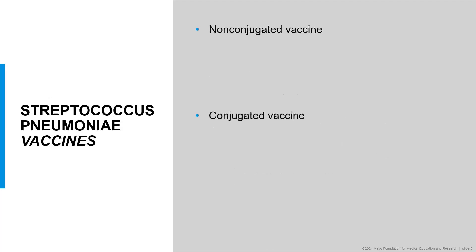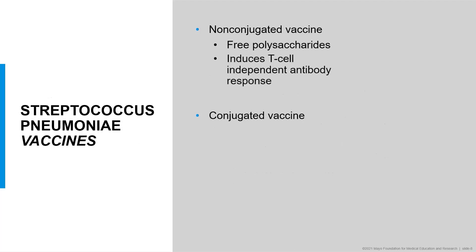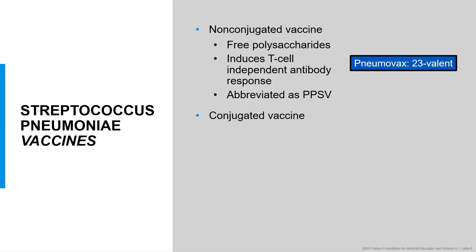There are several Streptococcus pneumonia vaccines available for clinical use, divided into two categories: non-conjugated and conjugated vaccines. In the non-conjugated vaccines, free polysaccharides representing the various serotypes induce a T-cell independent antibody response. These vaccines are referred to as PPSVs, or purified polysaccharide vaccines. Pneumovax is a 23-valent non-conjugated vaccine containing polysaccharides from 23 different serotypes. The primary issue with this type of vaccine is that it is generally not effective in children, especially those under two years of age, because a young child's immune system has only weak responses to pure polysaccharides.